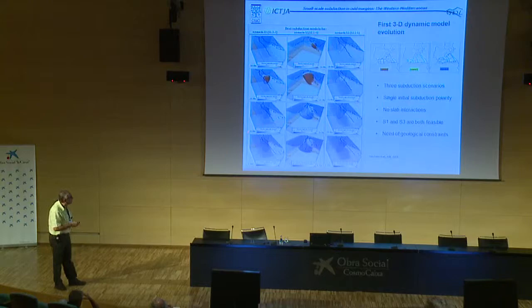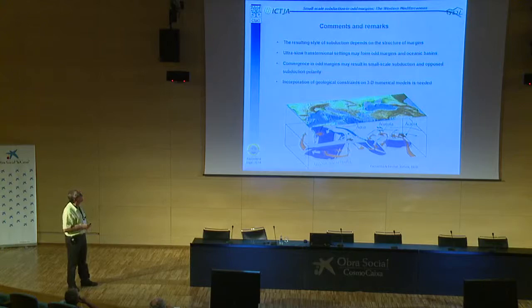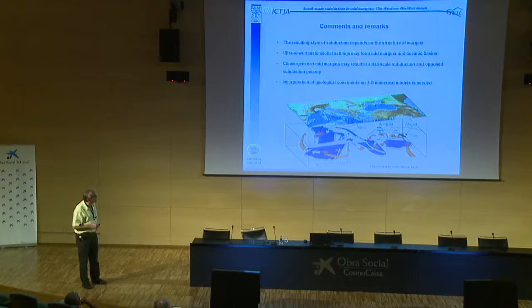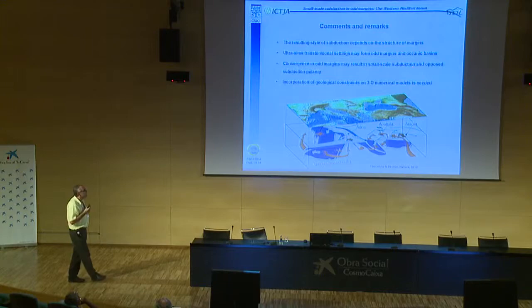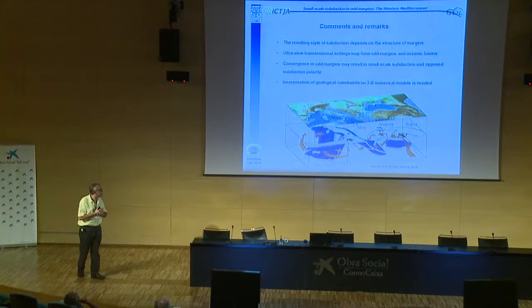In conclusion: the resulting style of subduction depends on the structure of the margins. Ultraslow transtensional settings may form hot margins and oceanic basins. Convergent hot margins may result in small-scale subduction and post-subduction polarity change. The incorporation of geological constraints in 3D numerical models is novel. Thank you.